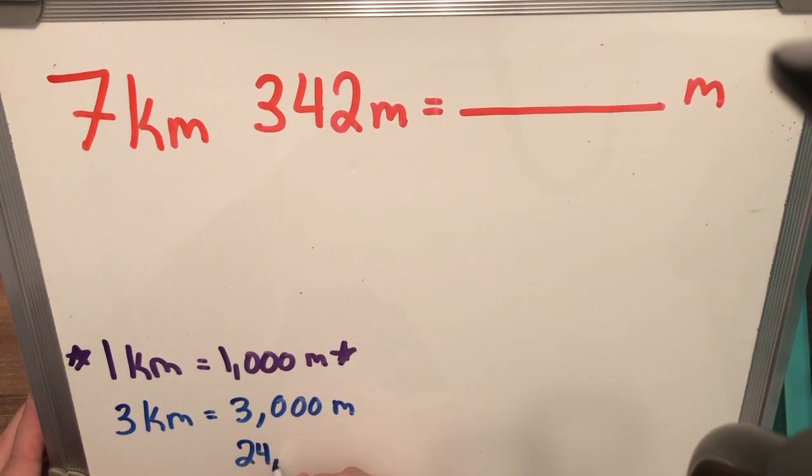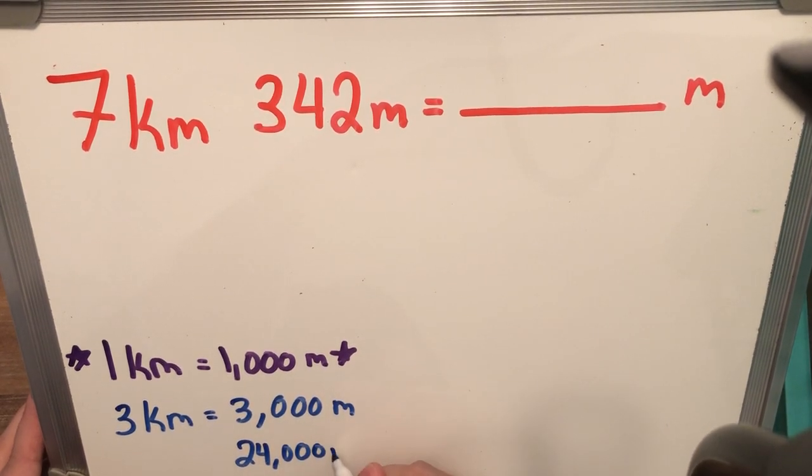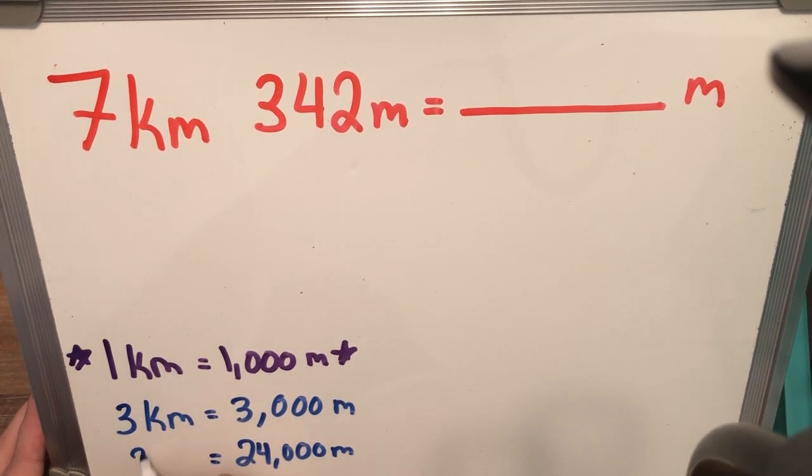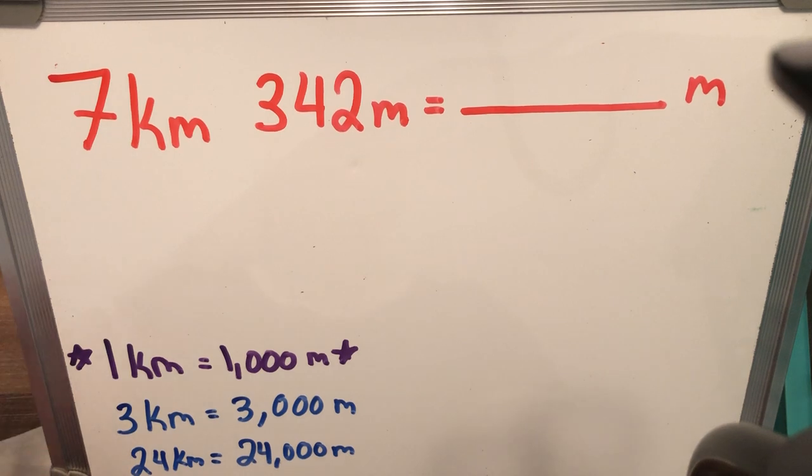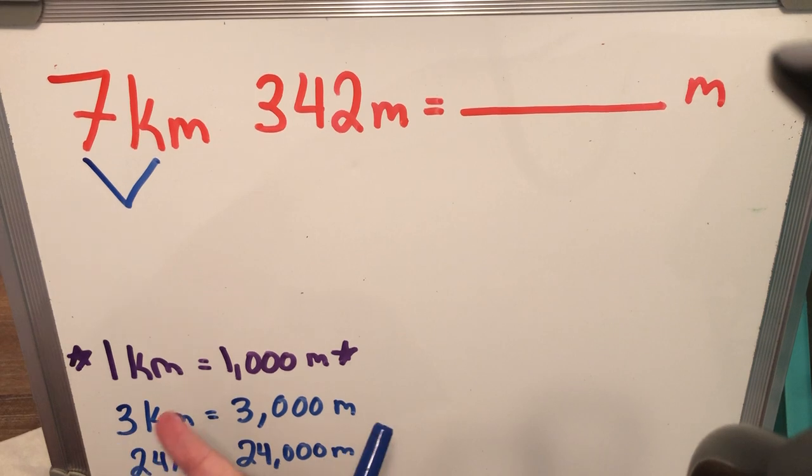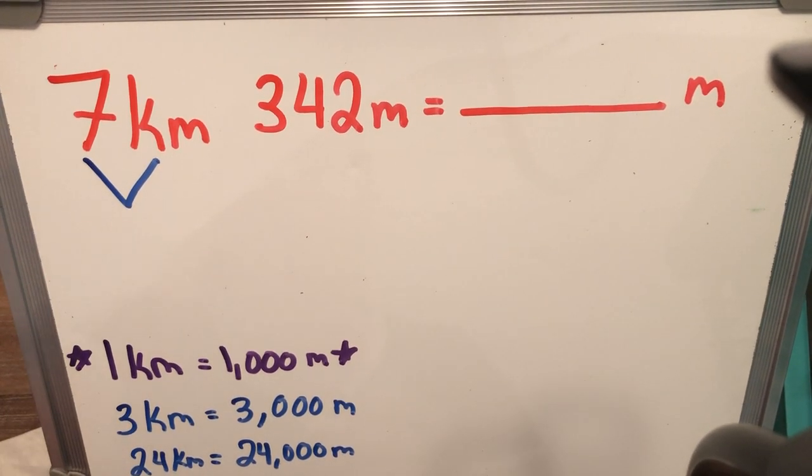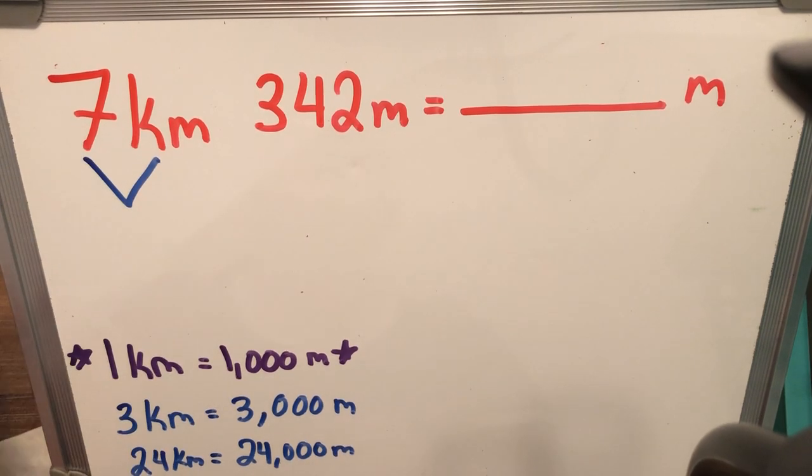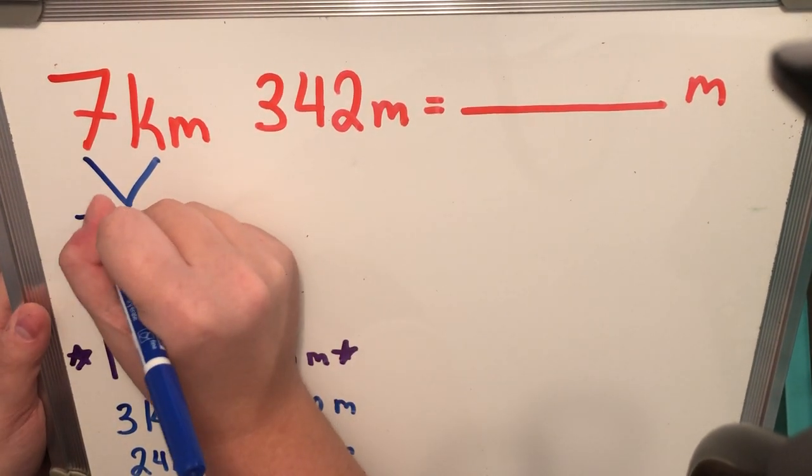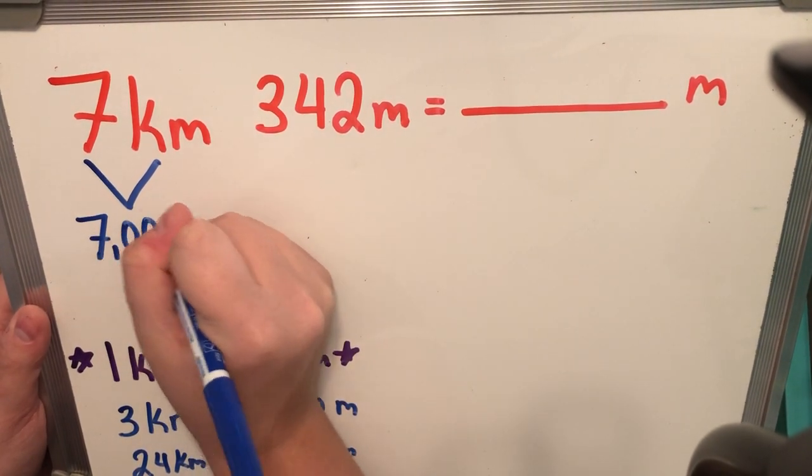24,000 m, if I go backwards, is worth and equal to 24 km, and so on. So knowing that information, I can take 7 km, and I know that just based on what we know, 1 km is worth 1,000 m. So 7 km is worth 7,000 m.